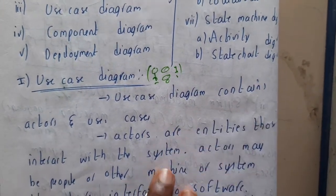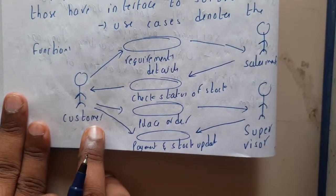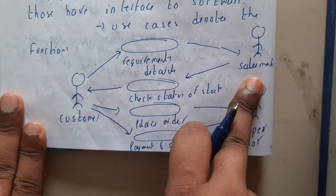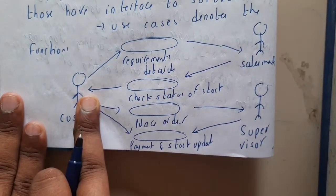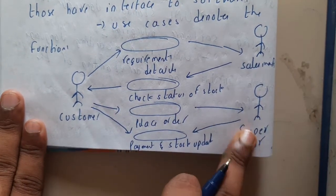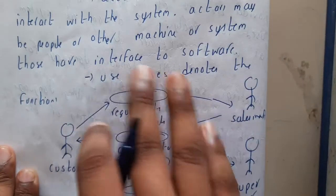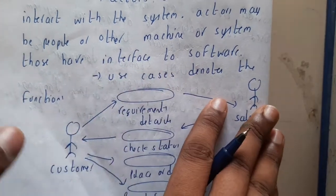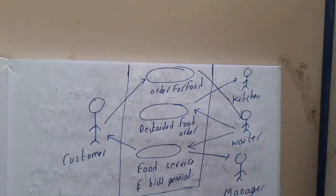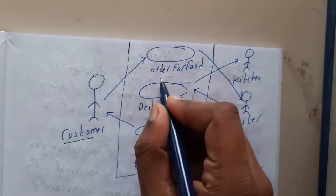Let me show you an example. A customer is requesting requirement details, calling the salesman, checking for status, or placing an order directly. The supervisor checks it, updates the stocks, and handles payments. Here's a simpler example: a customer can order food using the 'order food' function or activity.